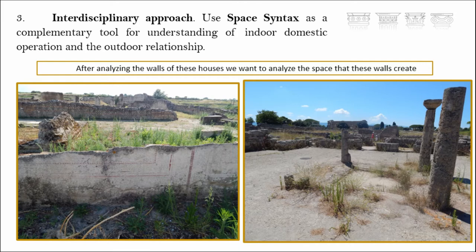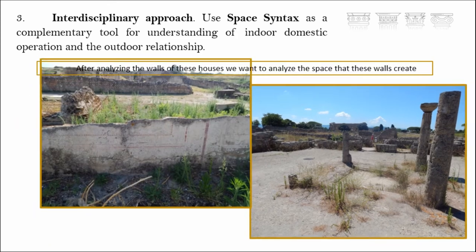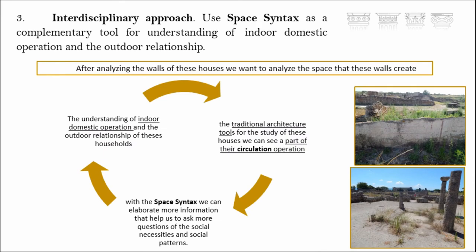As a domestic architecture specialist, I want to use space syntax as a complementary tool for better understanding the indoor organization and the relationship with the outside. It's true that with traditional architecture tools we can see part of the circulation indoors, but with space syntax we can elaborate more information, create control values, create axial maps, etc., that help to ask more questions about social necessity and social patterns, and see some differences between the tetrastyl courtyard house and the more classical or traditional Roman atrium house.